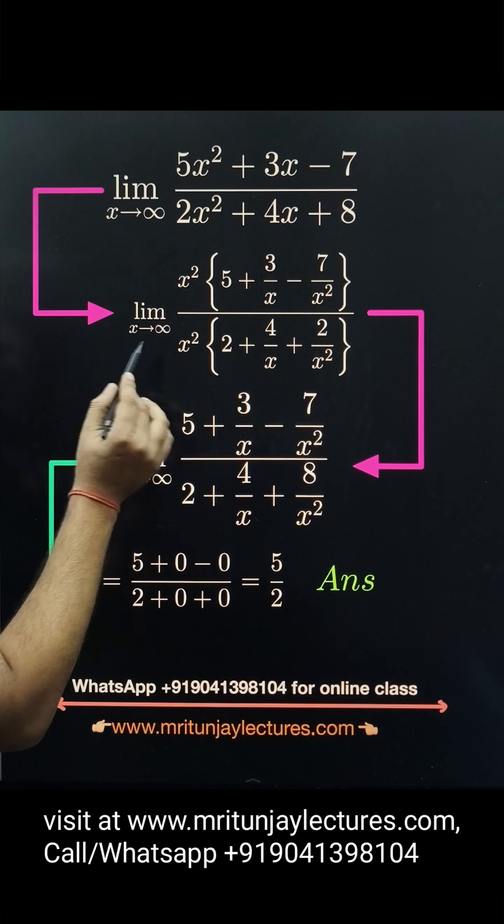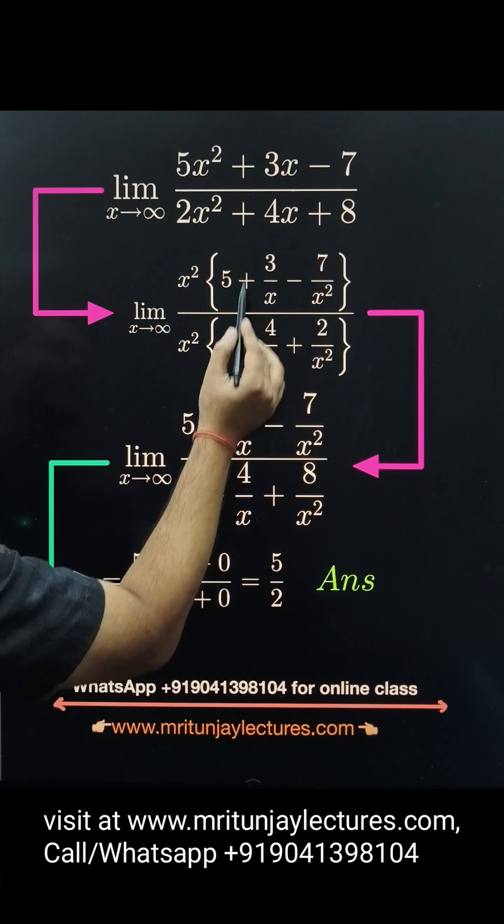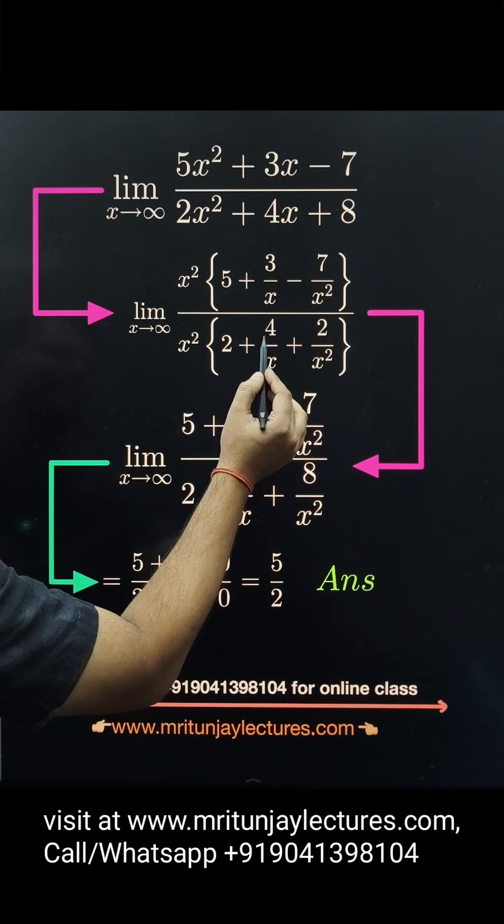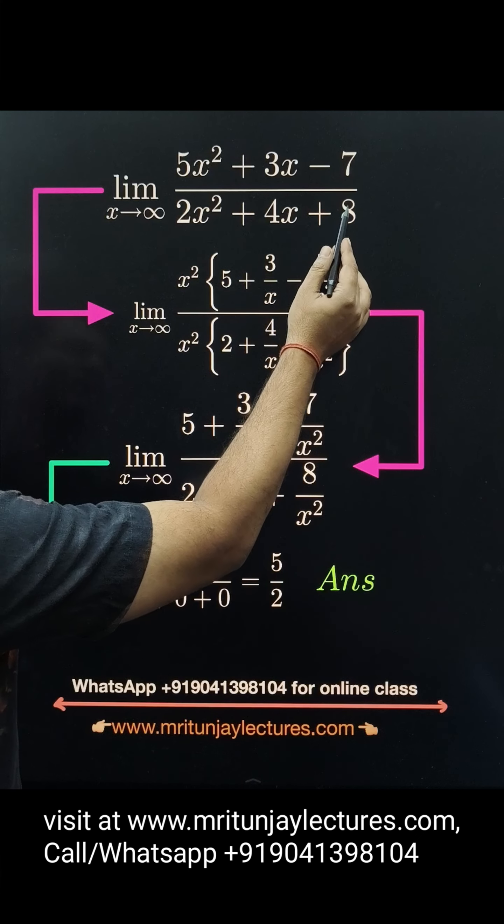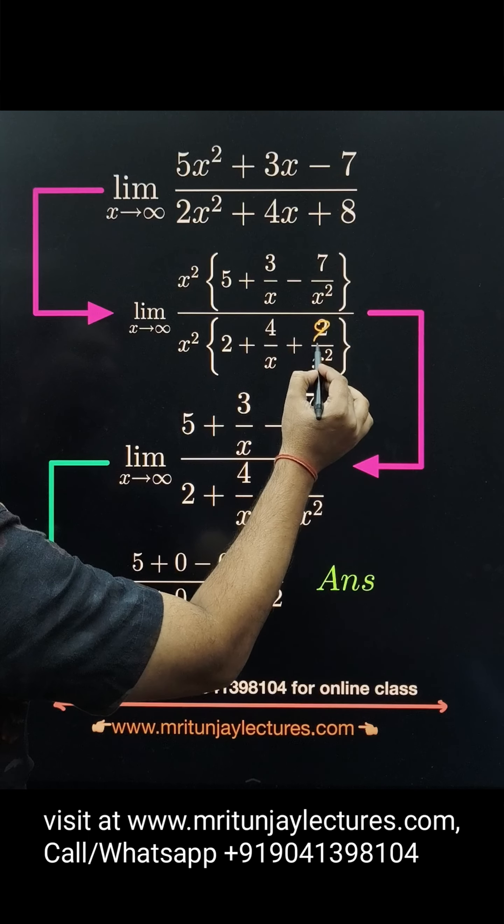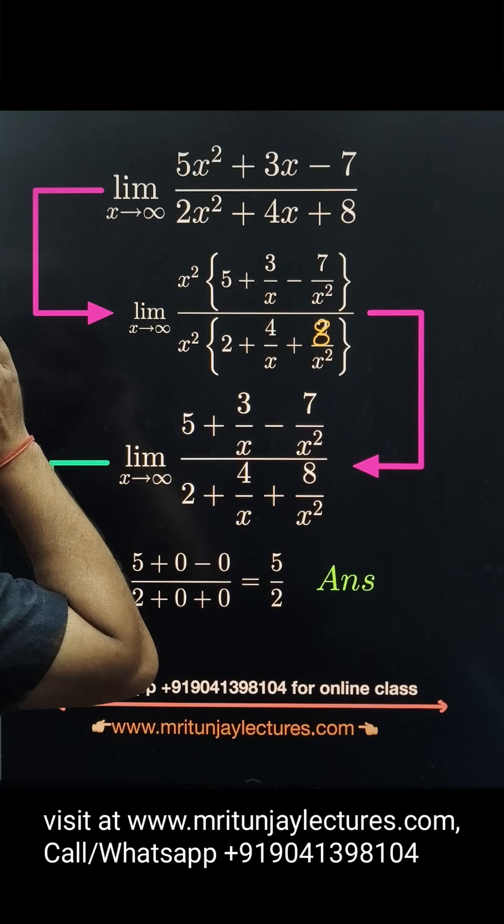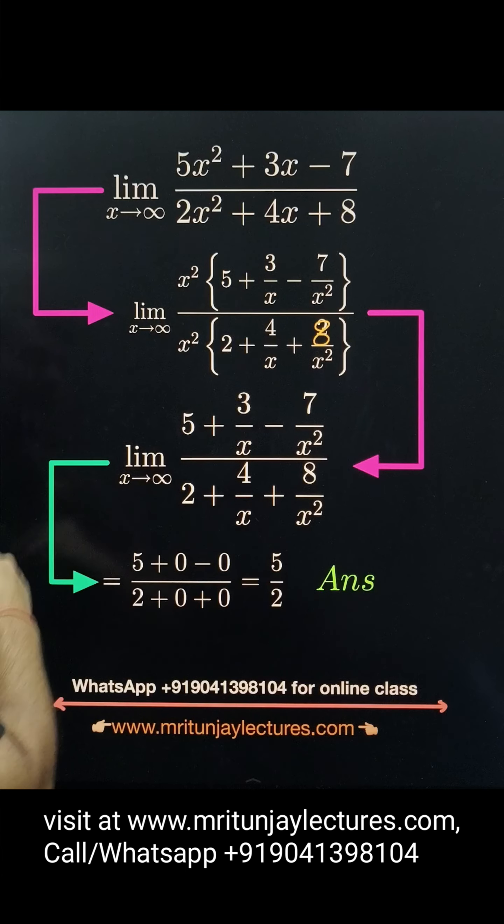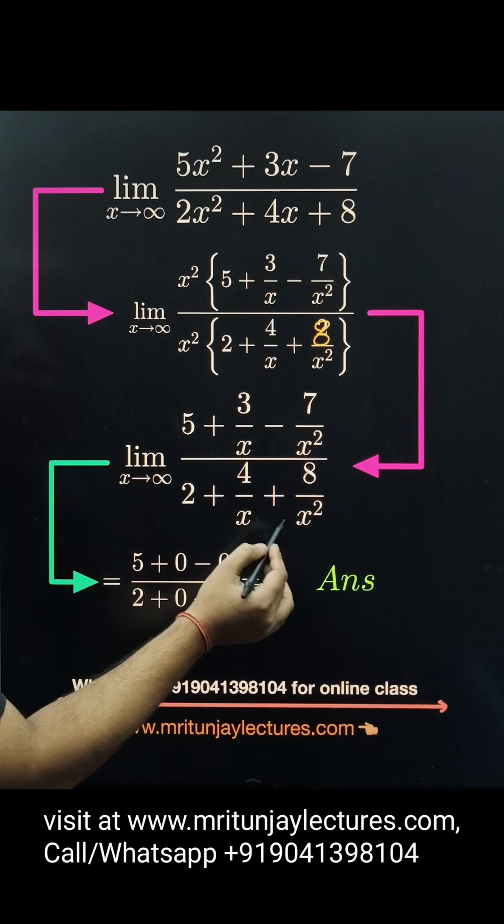In the denominator, take x² common: 2 plus 4x upon x², which is 4/x, plus 8 by x². After that, x² in numerator and denominator cancel, and we get this simplified form.